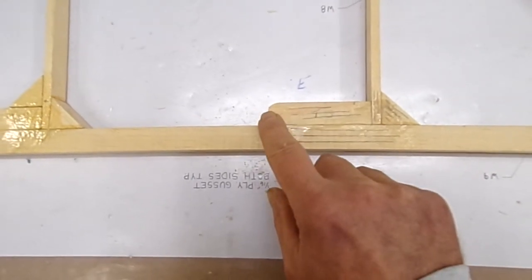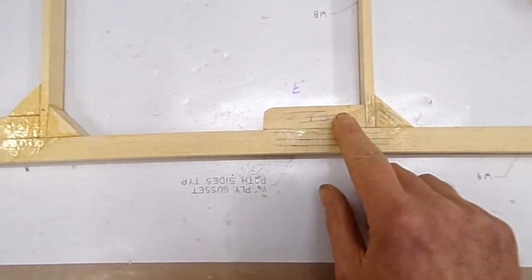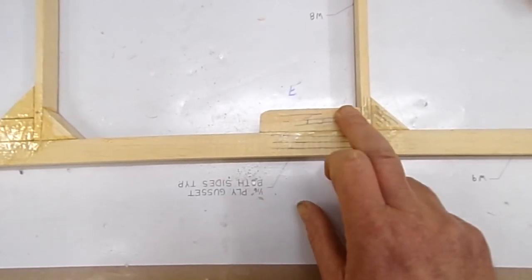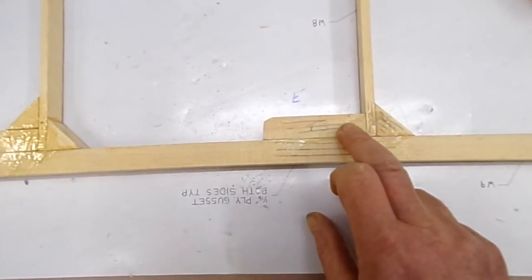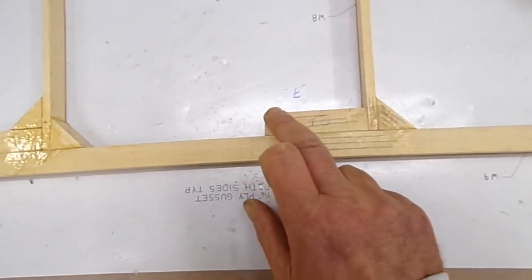So this block here, which is for the support that goes between the horizontal stabilizer or fixed tail plane to the vertical stabilizer fin, is here.